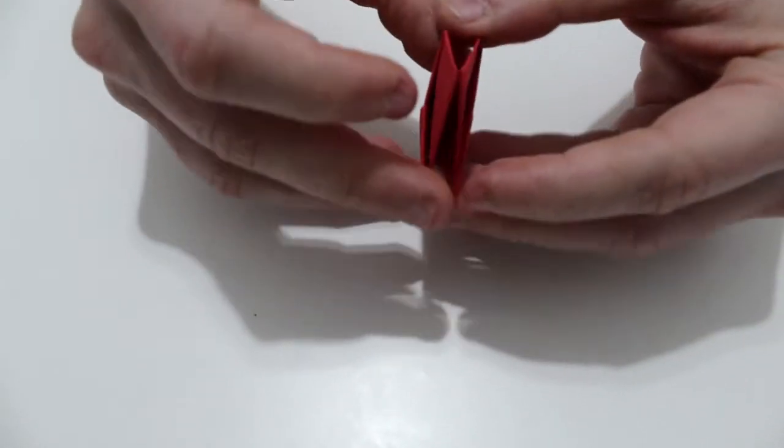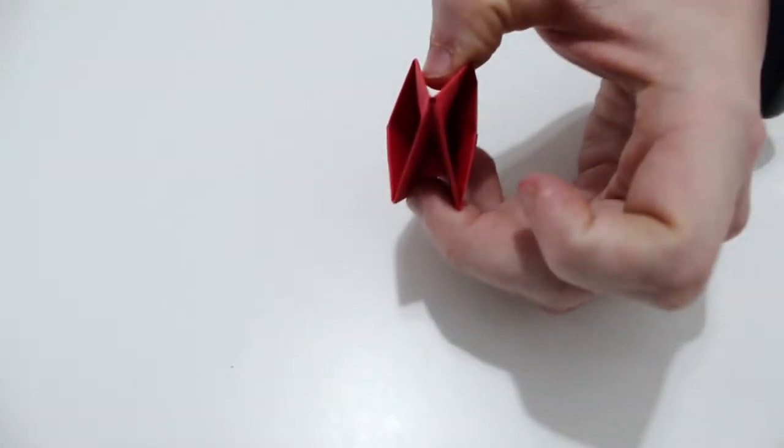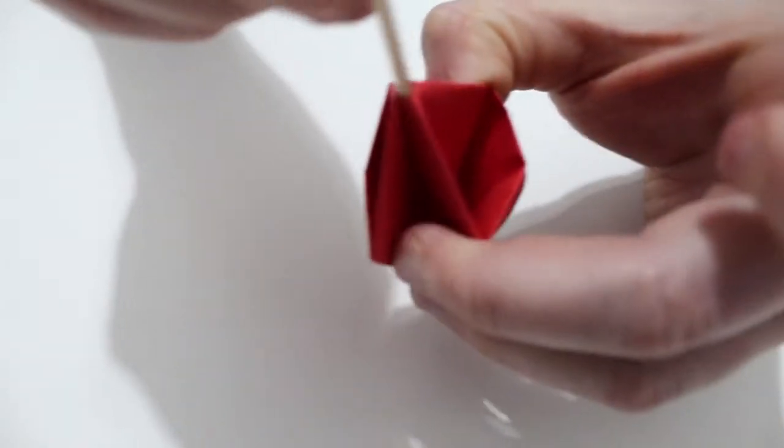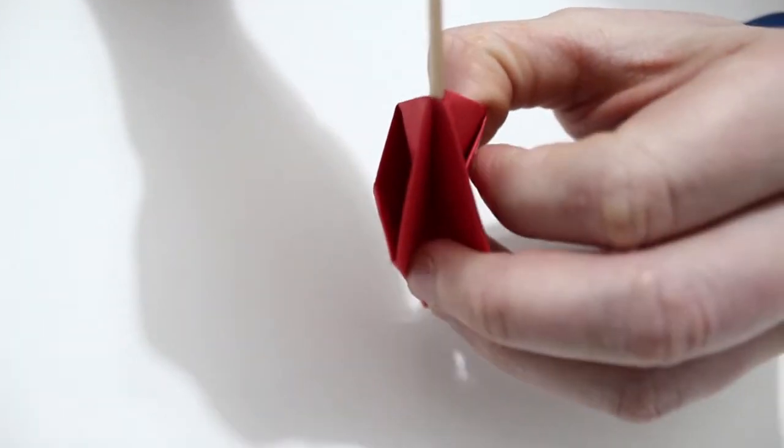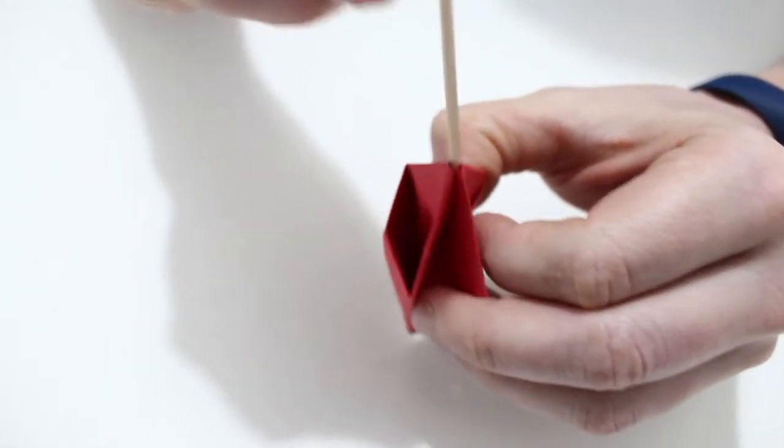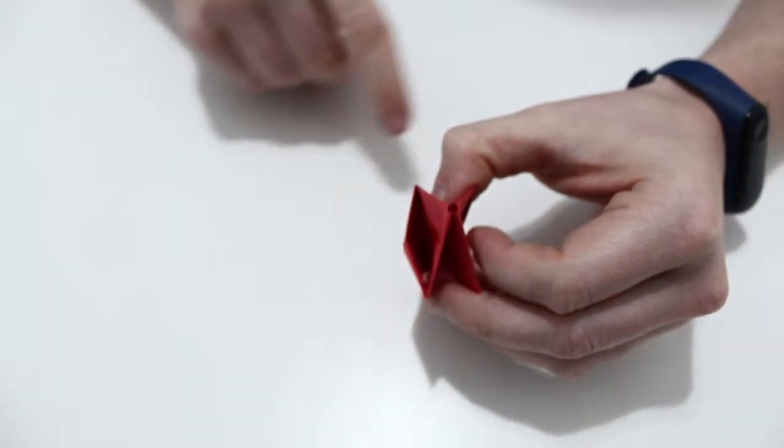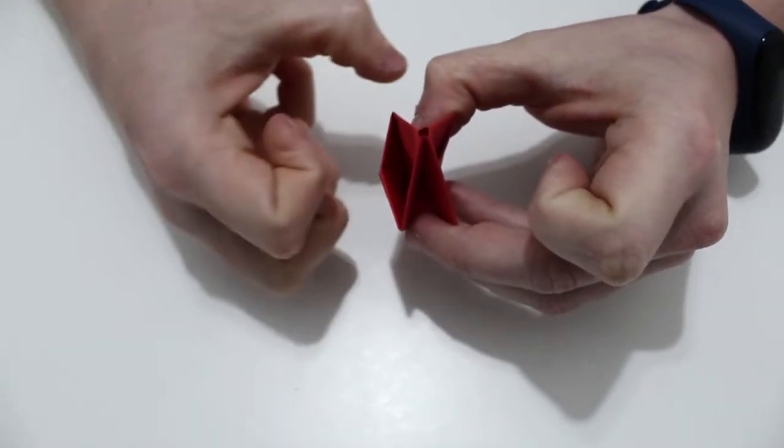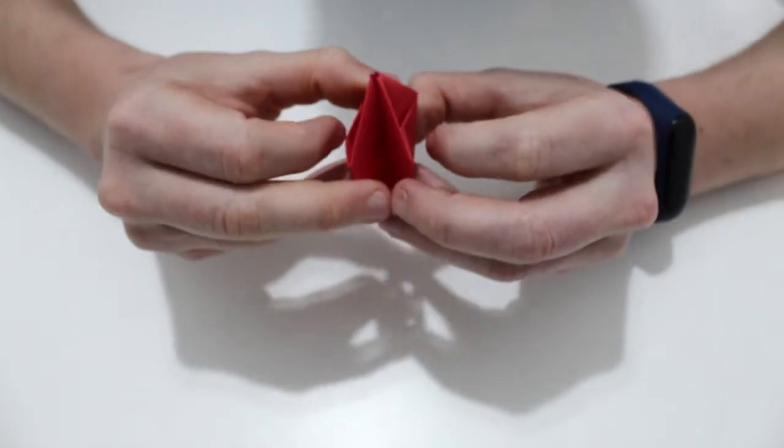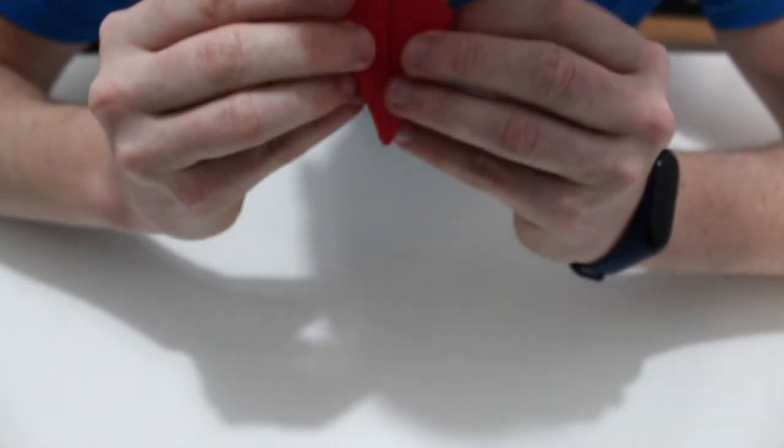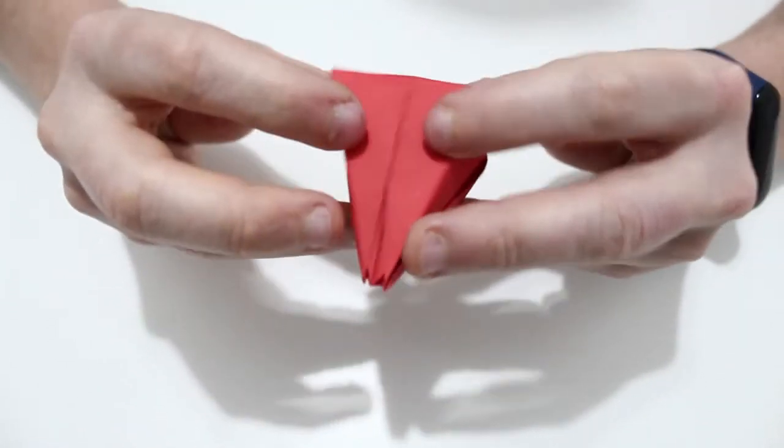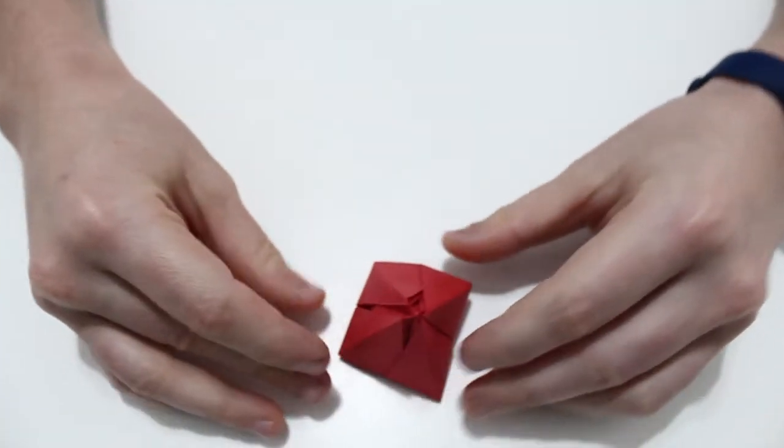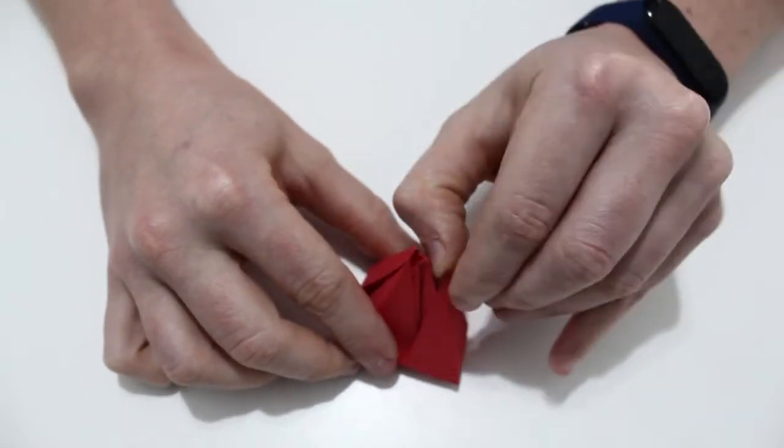Ahora lo cogemos así y con el palito de brocheta hacemos este agujerito un poquito más grande. Cuando lo tenemos, por ese agujero tendremos que hacer un soplido para que la flor se hinche.